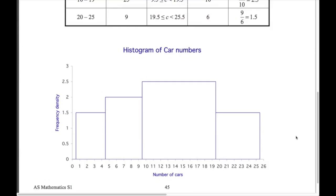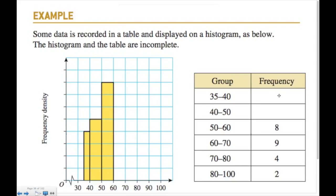Here are some good questions to help us understand histograms. We're given just enough information to complete the histogram and the table — we're given the bar for the 50 to 60 category and its frequency, so that's enough to complete the rest. Remembering that frequency density equals frequency divided by the class width, and this is continuous data.